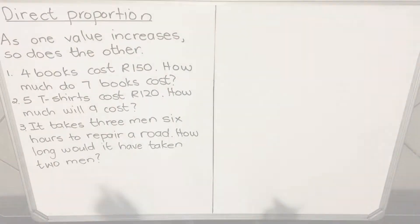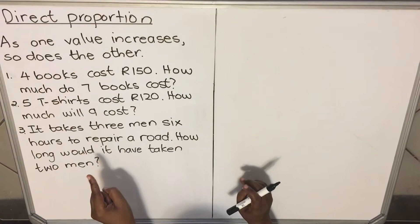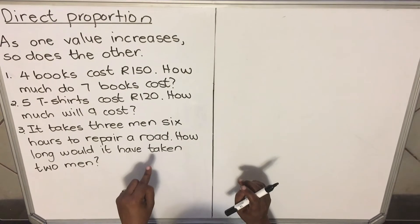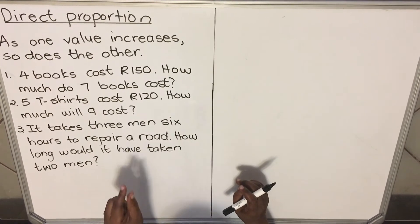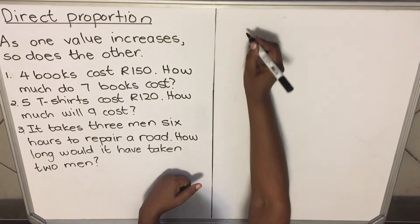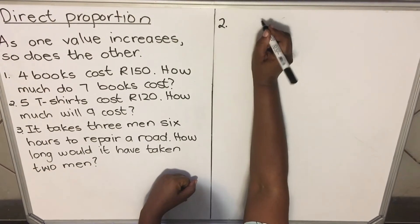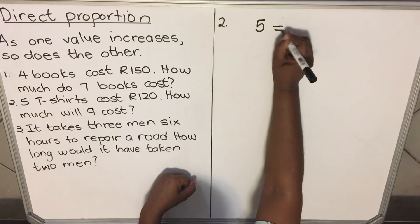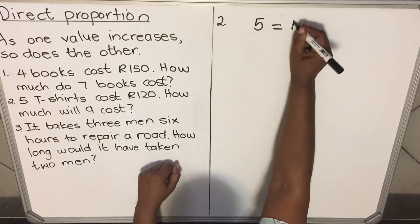Let's look at the next example. The second question says five t-shirts cost R120. How much will nine t-shirts cost? So this is number two. We have five equals R120.